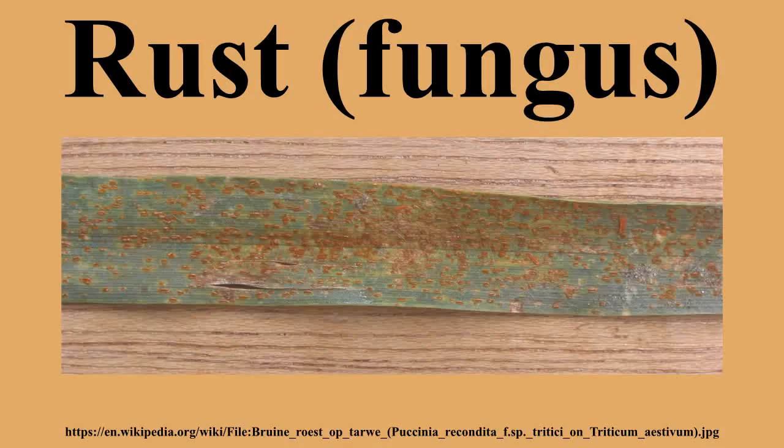The taxonomy of Pucciniales is complex, and the darker-colored smuts can be mistaken for rust. Rusts are named after the reddish, rusty-looking sori, and the disease is usually noticed after rain. The group is considered one of the most harmful pathogens to agriculture, horticulture, and forestry, and these fungi are major concerns and limiting factors for successful cultivation of agricultural and forestry crops.